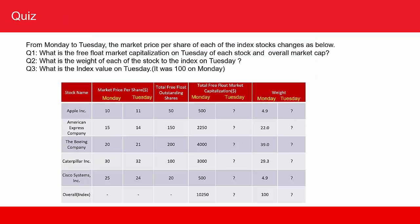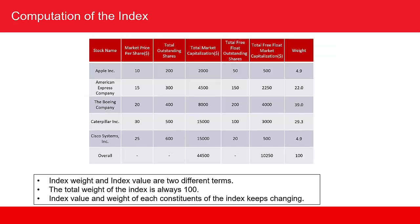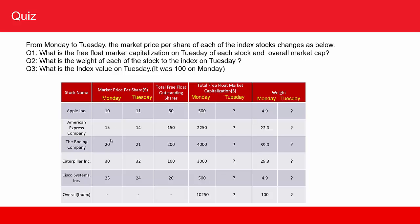Now for the quiz. This index was created on Monday and the index value was 100. Today is Tuesday — the stocks have been traded and the price of each stock has changed. Apple has changed to $11, Amex has changed to $14, and so on for each stock. The total free float outstanding shares obviously remain the same. Because the price per share has changed, the market capitalization will change, and as mentioned earlier, the weights are going to change as well.